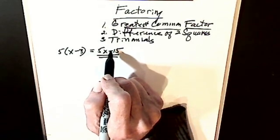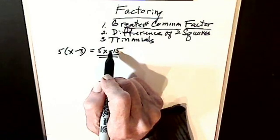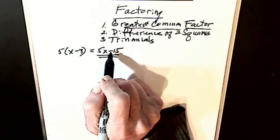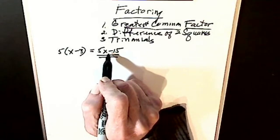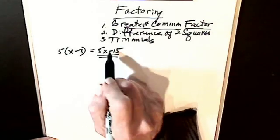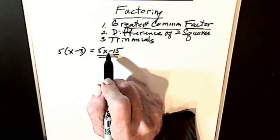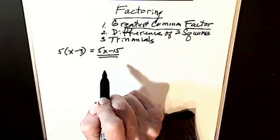If I said to you give me two factors of twenty, you have a lot of choice. You could say one and twenty. You could say two and ten. You could say four and five. So that's what we're doing — it's just a little harder with algebra. I'm starting with 5x minus 15 and my question is I want two factors that multiply together to give me 5x minus 15.